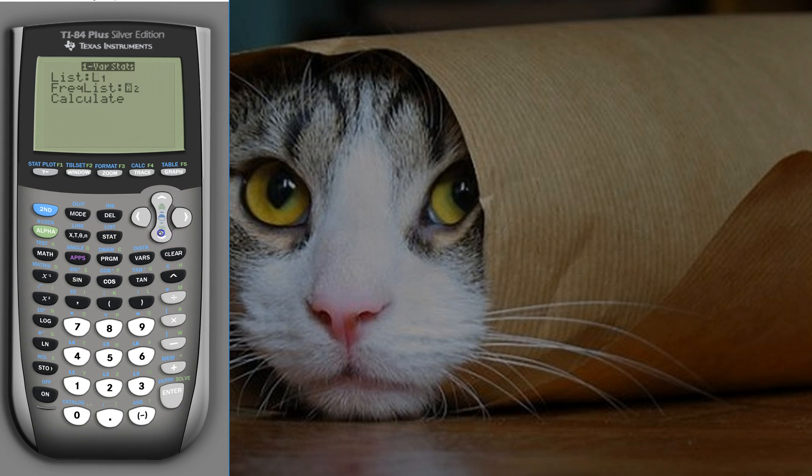Now if I go into one-var stats and press calculate, my n is 1, which means I have 100% of my data. My x̄ is my mean, 2.25, and my standard deviation is 1.2600.